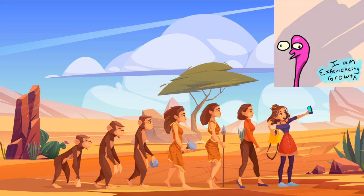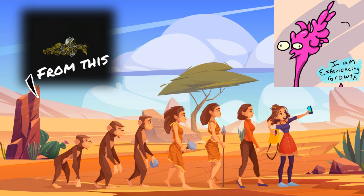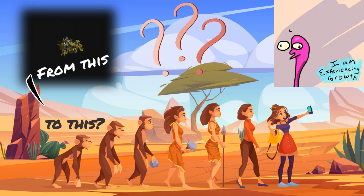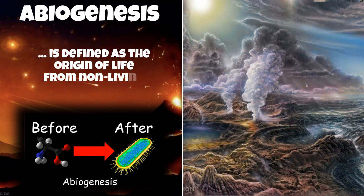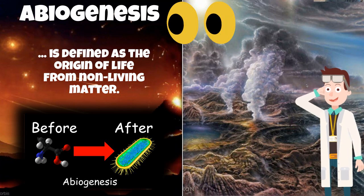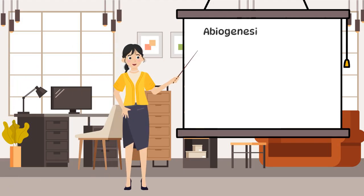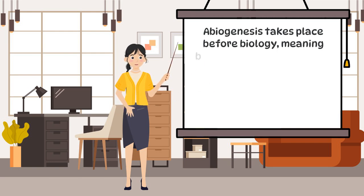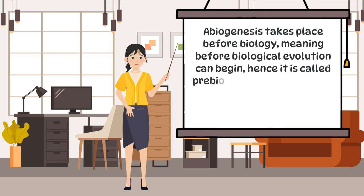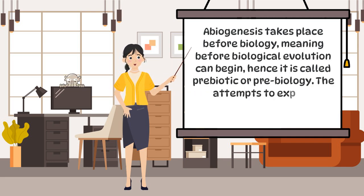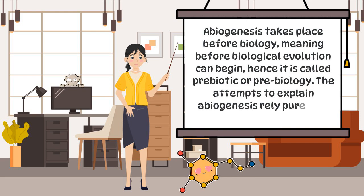So, if evolution's mechanisms like random mutation and natural selection are not applicable when it comes to the origin of life, what should be? Abiogenesis. Abiogenesis is defined as the origin of life from non-living matter. To construct any convincing theory about abiogenesis, we must take into account the conditions on earth about 4 billion years ago. Abiogenesis takes place before biology, meaning before biological evolution can begin, hence it is called prebiotic or prebiology.